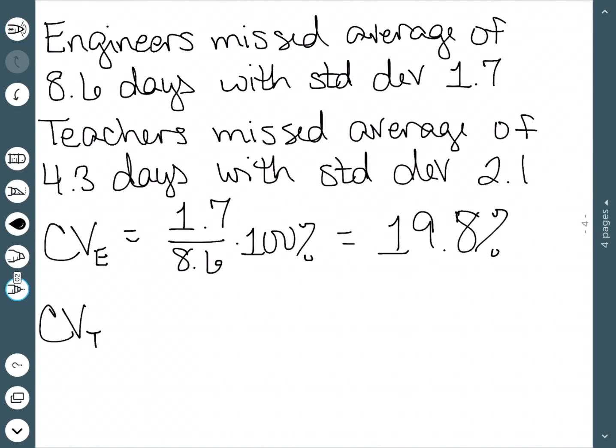We do the teachers, so T for teachers. Our standard deviation was 2.1 and our mean was 4.3 times 100%. And this time when we work that out, we get 48.8%.